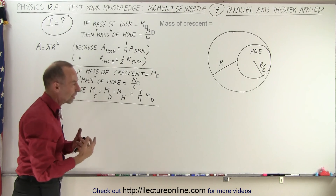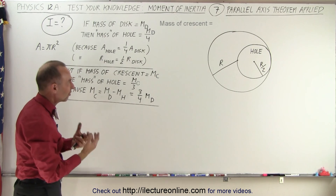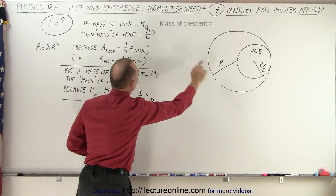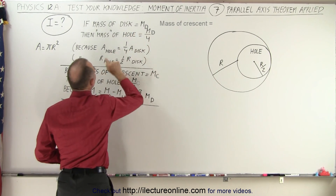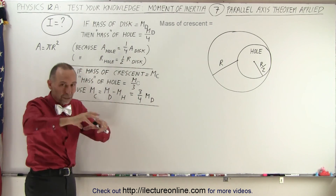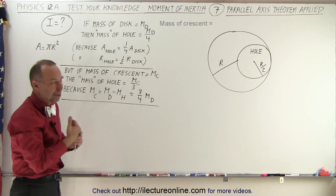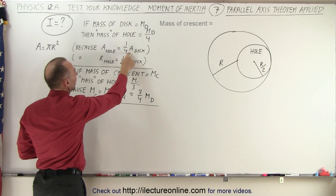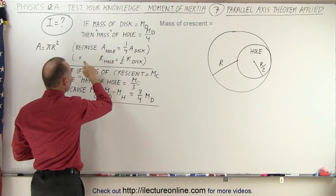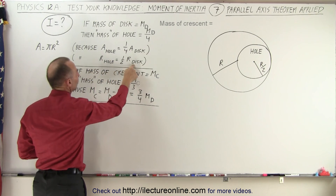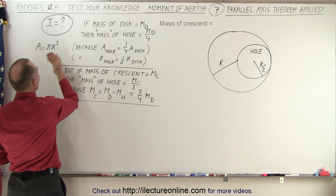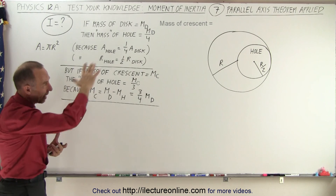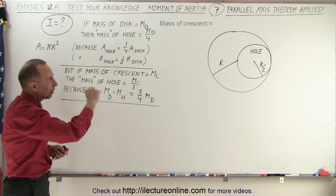Let's make sense of how we express the mass of the disc. If we take the total mass of the disc before the hole was cut out and set the mass equal to M, then the mass of the hole that was cut out will be one-quarter of that — M over four. The area of the hole is one-quarter the area of the disc because the radius of the hole is half the radius of the disc. Area is πR², so if you double the radius, you quadruple the area, meaning the total disc area is four times the hole area.